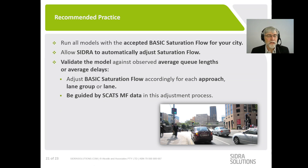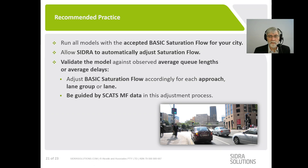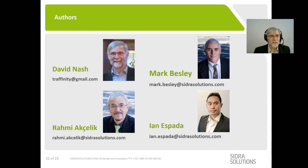The recommended practice is to run all models with the accepted basic saturation flow for the relevant city, allowing SIDRA to automatically adjust for all effects on saturation flow. For important models, validate against observed performance measures and adjust basic saturation flow accordingly for each approach, lane group, or lane as part of that validation process. You can be guided by SCATS MF in that adjustment — as seen with Springvale Road having higher MF values than Canterbury Road. I'd like to thank my colleagues Rami, Mark, and Ian for their input, and we'd be happy to take any questions.